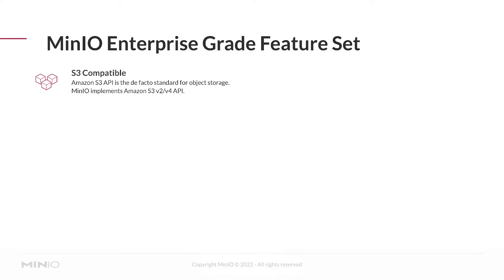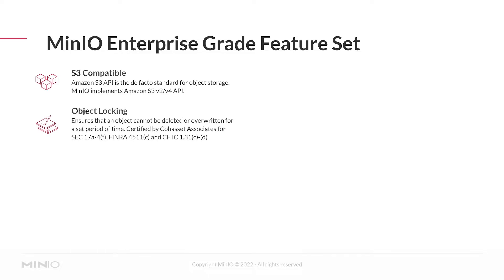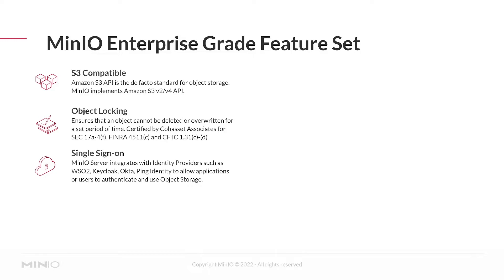We want MinIO to look as indistinguishable as possible from S3, so if your clients are writing against Amazon S3 or MinIO, they shouldn't be able to tell a difference. But we go quite a bit further than that — we implement features like object locking and object retention for protecting objects for regulatory or compliance reasons.